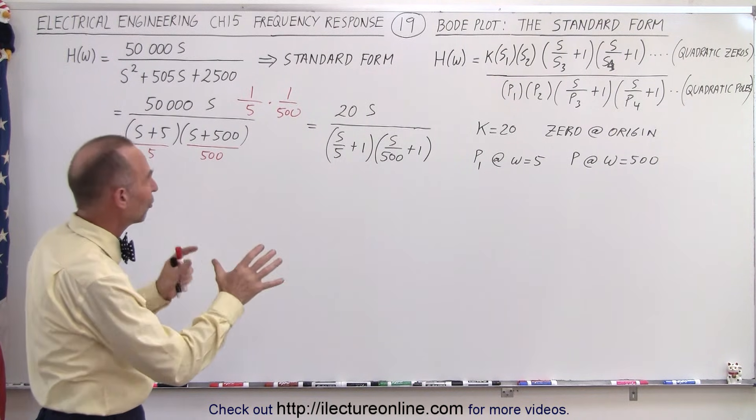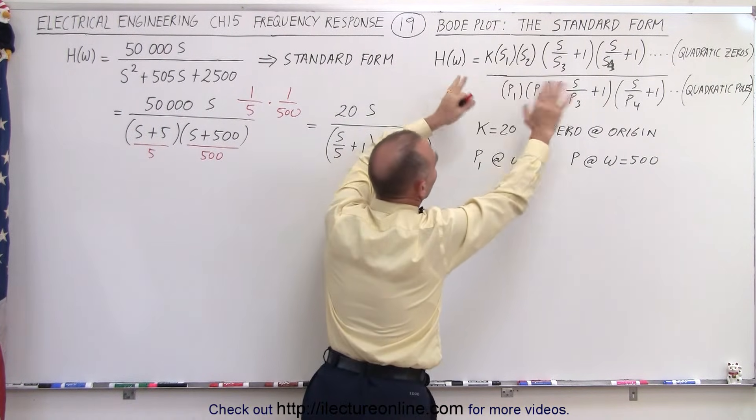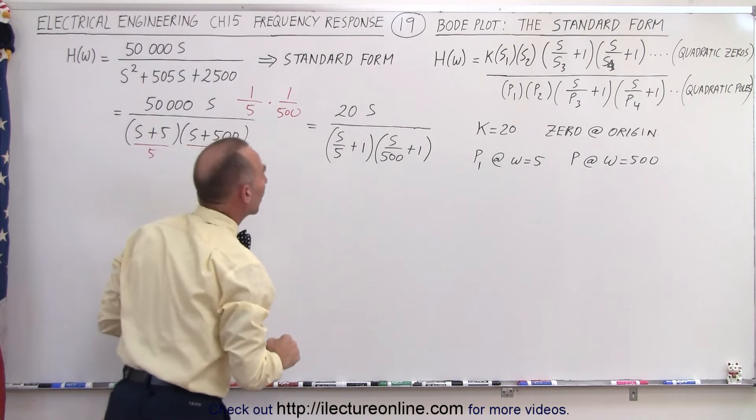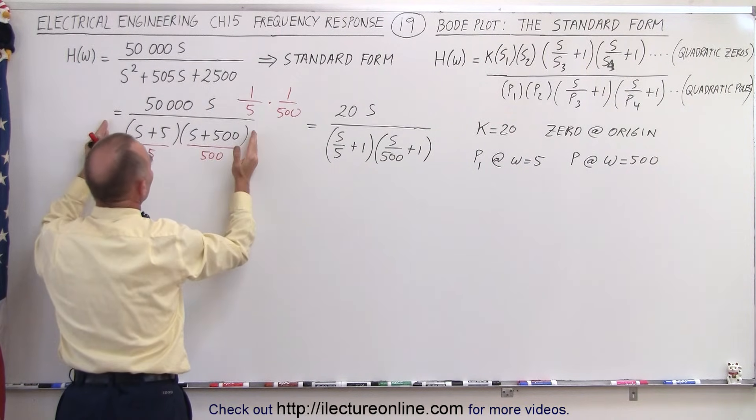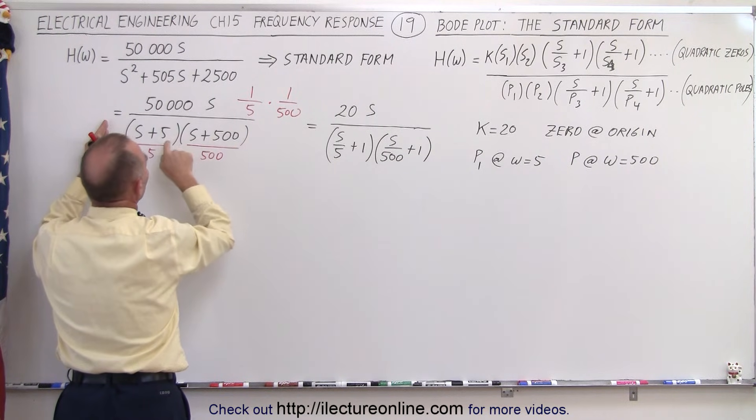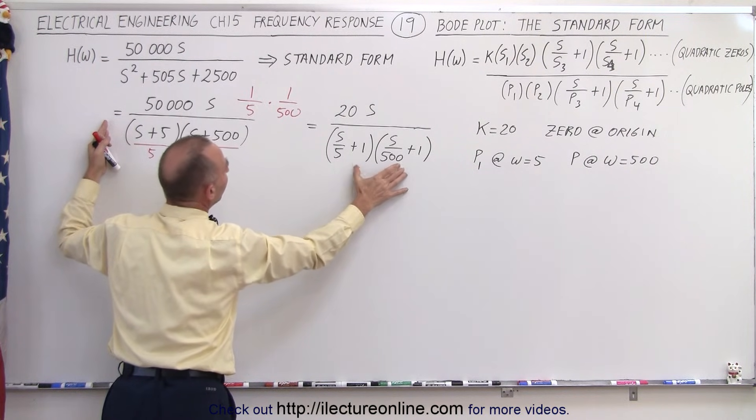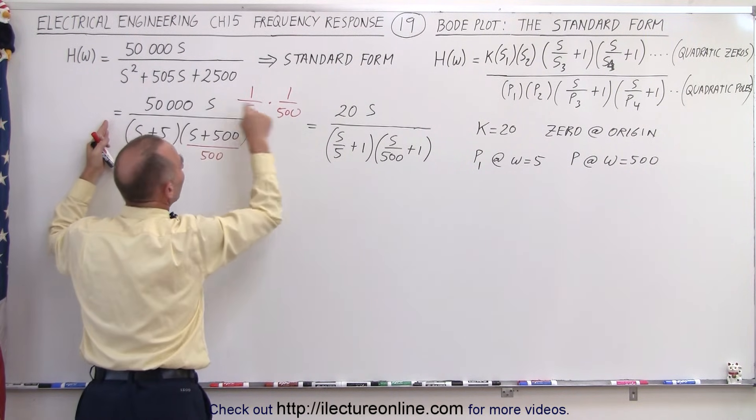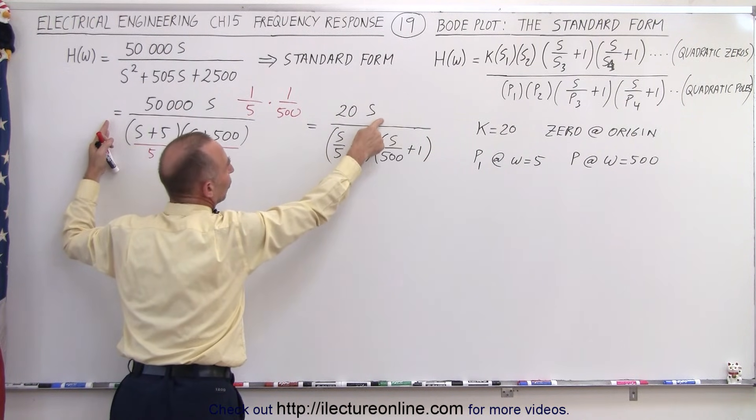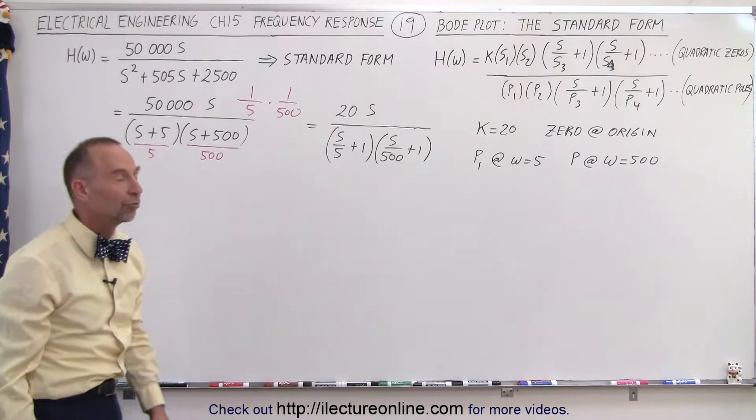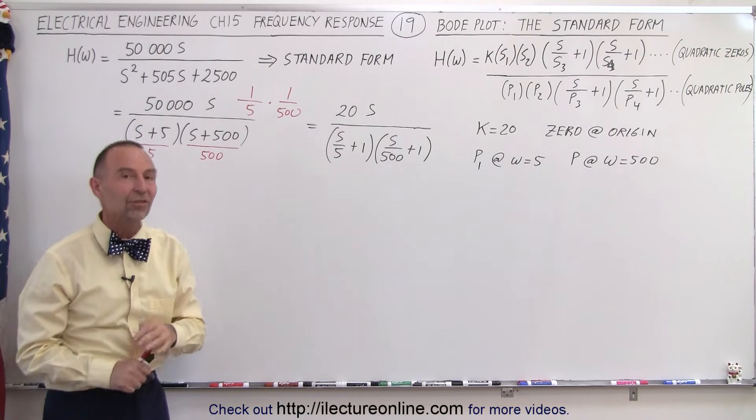But we're going to show you how to do that later. At this point you want to see that generally any transfer function needs to be placed somehow in the standard form of the transfer function so we could draw the Bode plot. So we took what we had here, we factored the denominator, we then divided these two by 5 and by 500 to put those two in the standard form for the simple pole. That means we have to divide the numerator by 2500 to get the constant k equals 20. We have the zero at the origin and the two poles at the two values for p. And that is how we take a transfer function and place it in the standard form.